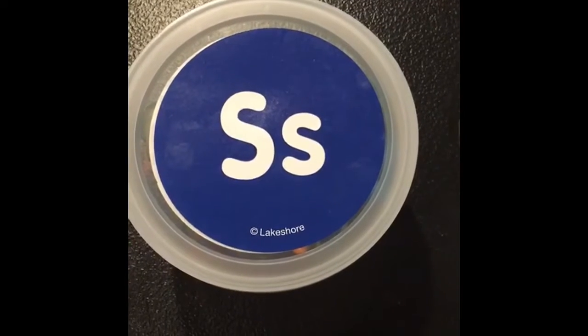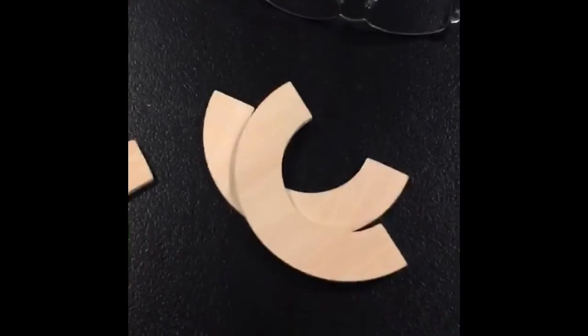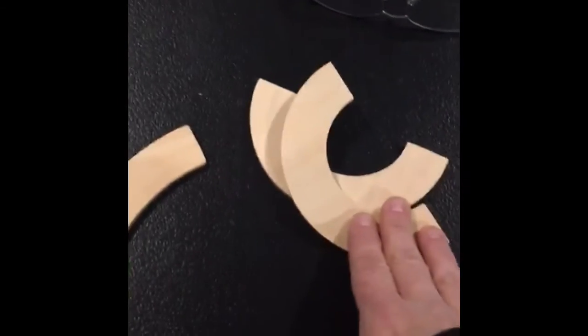We're still talking about the letter S. So now we're going to use our wood pieces to make the letter S. We're going to use big curves and little curves because we're going to make an uppercase S and a lowercase S.